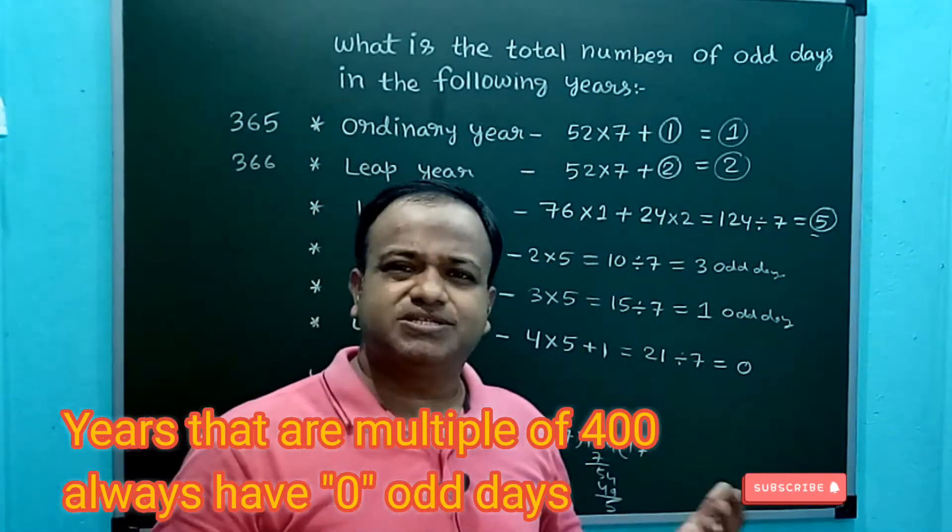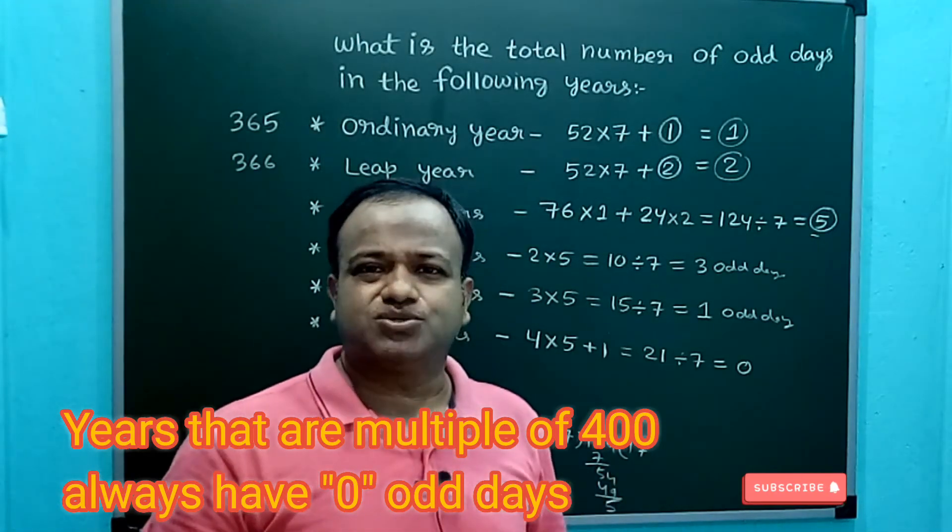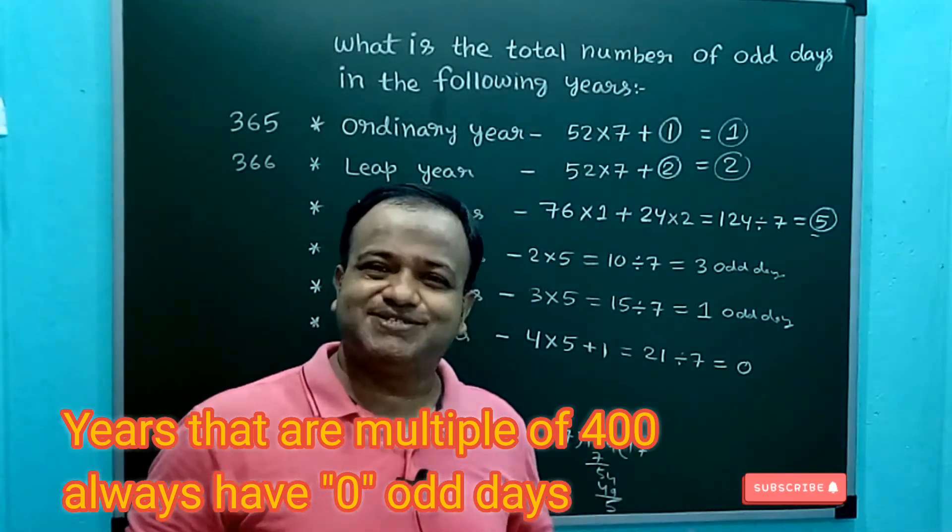Similarly, 800, 1200, 1600, 2000—all these years have 0 odd days.